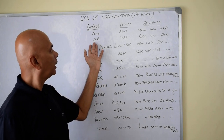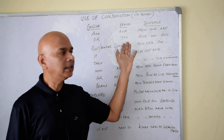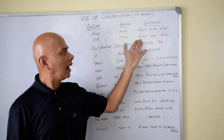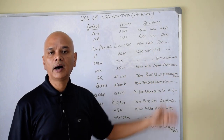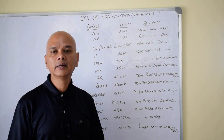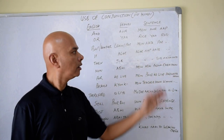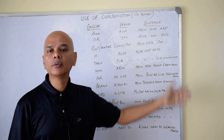'Or' in English is 'yaa' in Hindi. For example: Rice yaa roti — I will eat rice or roti. Main rice yaa roti khaun ga.